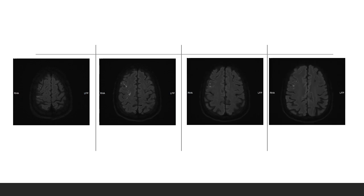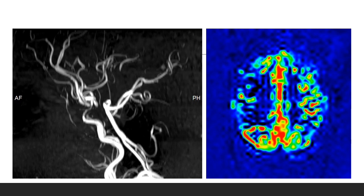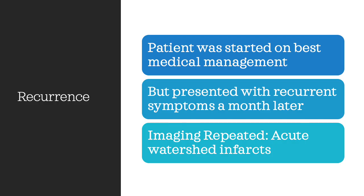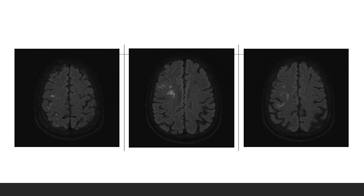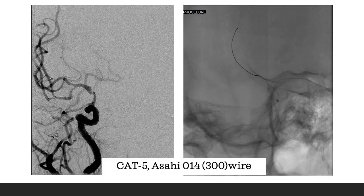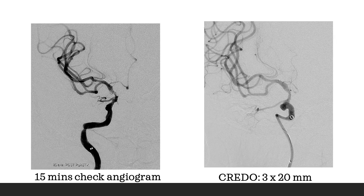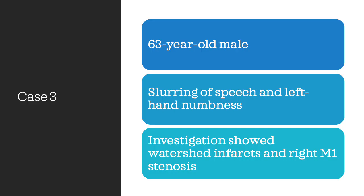Case 2: 62-year-old with slurring of speech and left hemiparesis, diabetic. MRI in April followed by DSA shows watershed infarcts between MCA and ICA on the right side. The ICA is critically stenosed with hypoperfusion. This was a very dirty vessel. Patient was on best medical management but not responding — we got a larger infarct. We performed balloon angioplasty with a CAT5, a 300 mm wire, balloon dilatation with a 2 mm balloon, then placed a Credo 3×20 stent with a pretty decent result. Patient was totally asymptomatic.